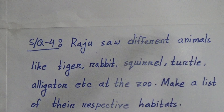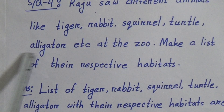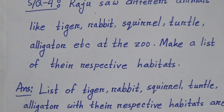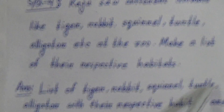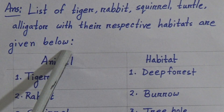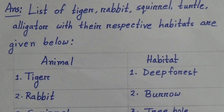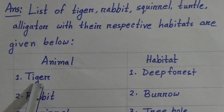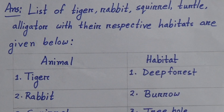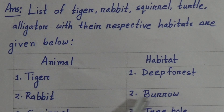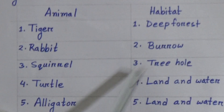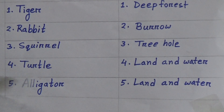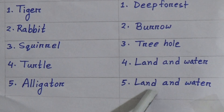Short question four: Raju saw different animals like tiger, rabbit, squirrel, turtle, and alligator at the zoo. Make a list of their respective habitats. Answer: draw a table with animal on the left and habitat on the right. Tiger — deep forest; rabbit — burrow; squirrel — tree hole; turtle — land and water; alligator — land and water.